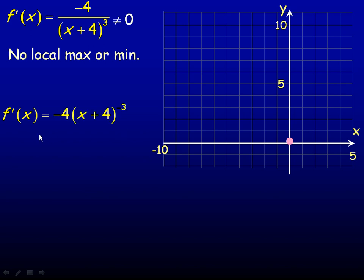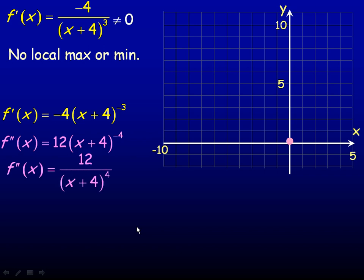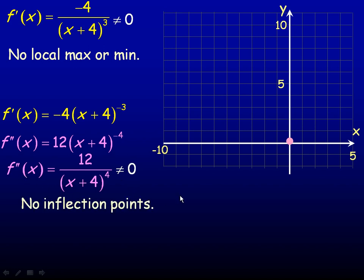Now let's find the second derivative to check concavity. Starting from the first derivative, negative 4 times x plus 4 to the negative 3, we differentiate: negative 3 times negative 4 gives 12, and subtracting 1 from the exponent gives x plus 4 to the power of negative 4. So the second derivative is 12 over x plus 4 to the 4th. Just like the first derivative, this cannot equal 0 because there is no x in the numerator. So there are no inflection points.